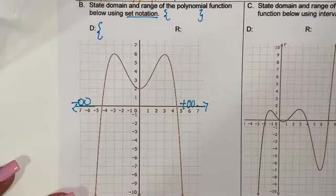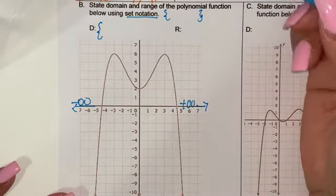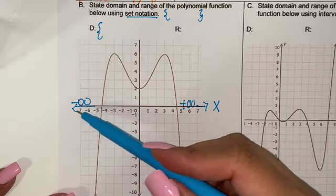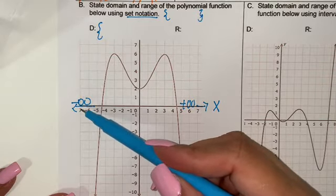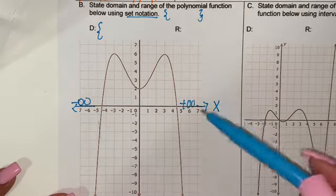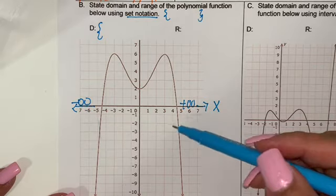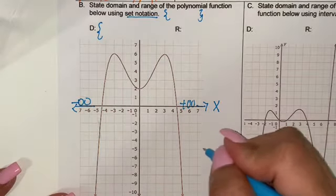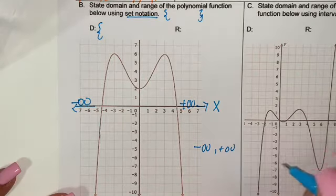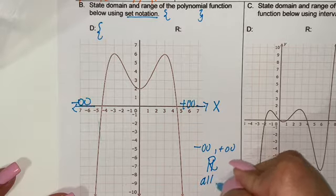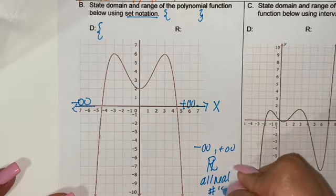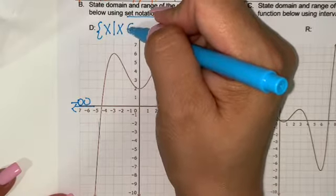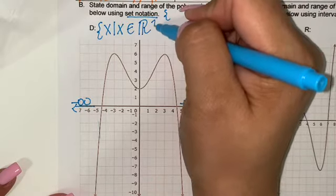State the domain and range of the polynomial function using set notation — this is the one with the braces, looking at the x-axis first. Is there anything stopping the graph from going negative on the x-axis? No, so it's negative infinity. Is there anything stopping it from increasing positively? No, so it's positive infinity. When you talk about negative infinity to positive infinity, you're also saying this is all real numbers. So it's going to be x such that x is an element of all real numbers, which is just that big R.